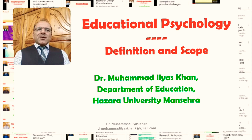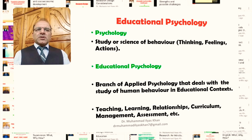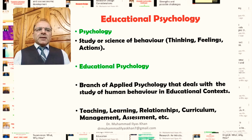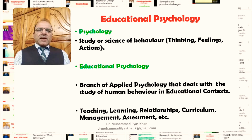What is educational psychology and what is the scope of educational psychology? These are the questions we will briefly respond to. First, before we explore the meaning of educational psychology, what is psychology? Psychology is the study or science of behavior — behavior consists of our thinking, feelings, and actions. So the systematic or scientific study of our thinking, feelings, and actions can be called psychology.